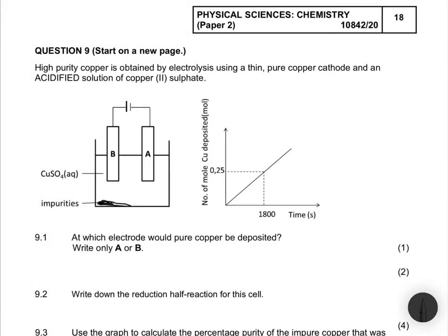High purity copper is obtained by electrolysis using a thin pure copper cathode and an acidified solution of copper sulfate, as clearly demonstrated on our schematic. Question 9.1 asks at which electrode pure copper would be deposited — A or B.